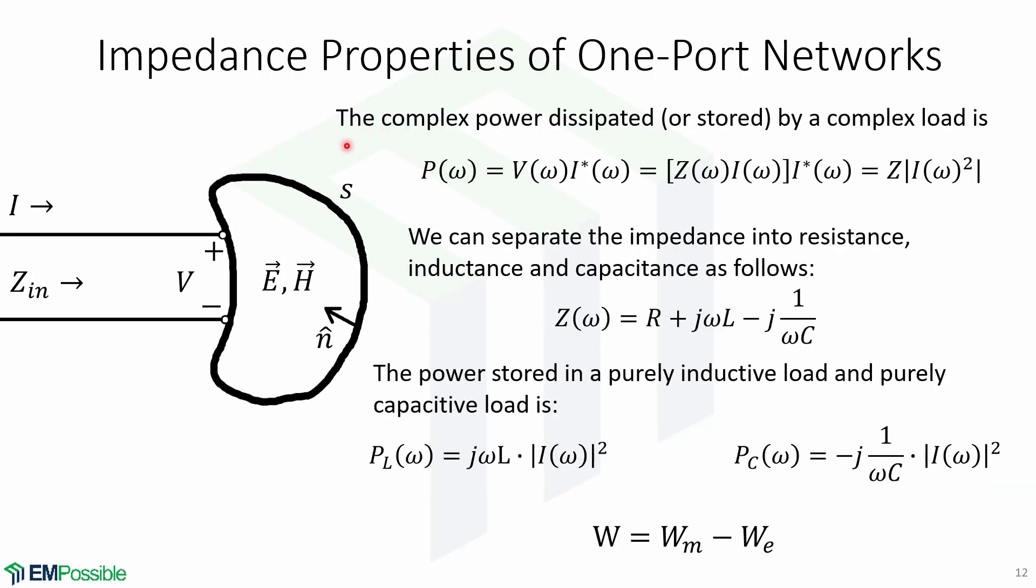Now, the complex power dissipated or stored by a complex load is given by this expression. As a function of frequency, it is equal to the voltage times the conjugate of the current. We remember that voltage is equal to impedance times current, so we can write this in terms of impedance and current to arrive at this expression.